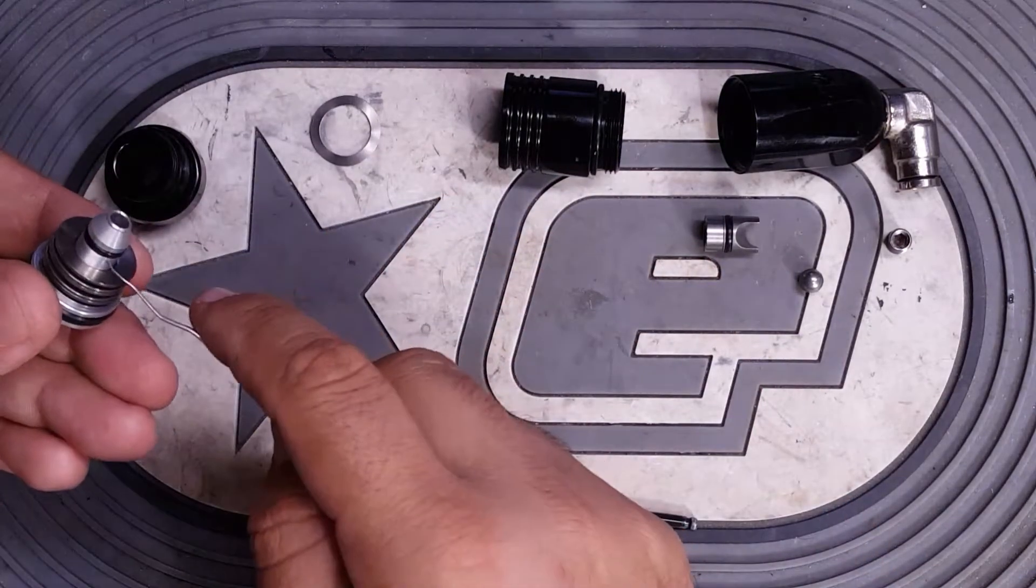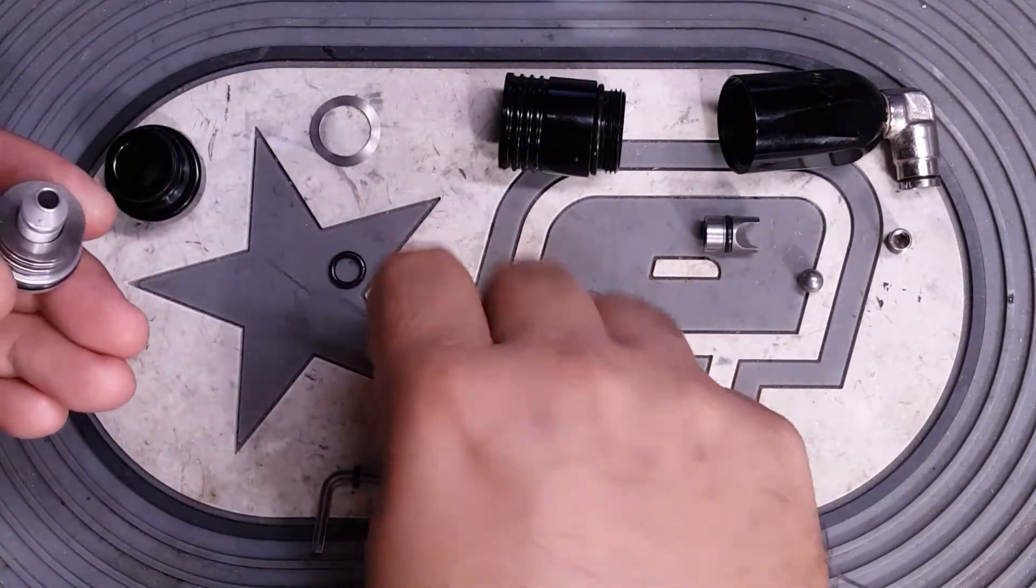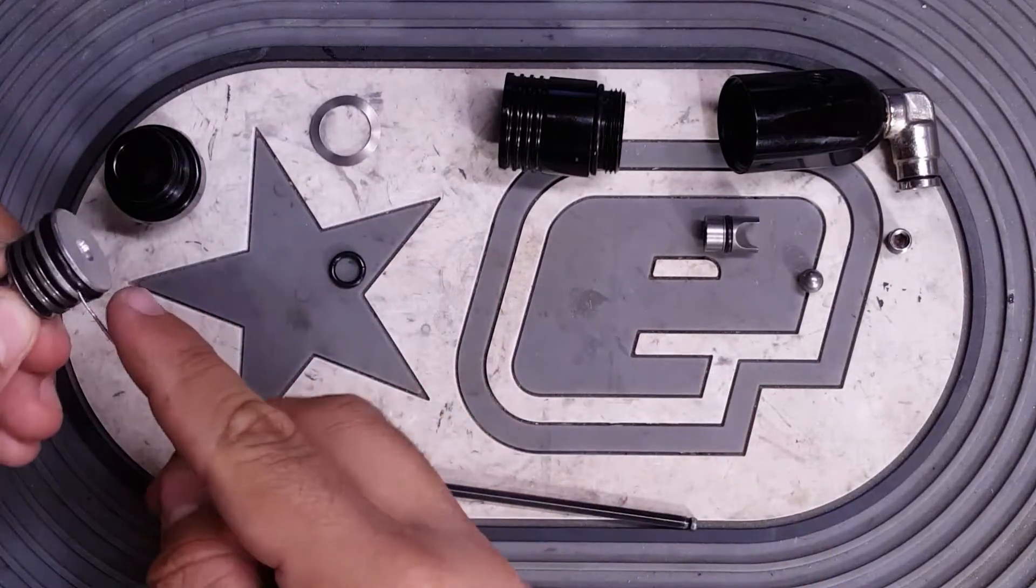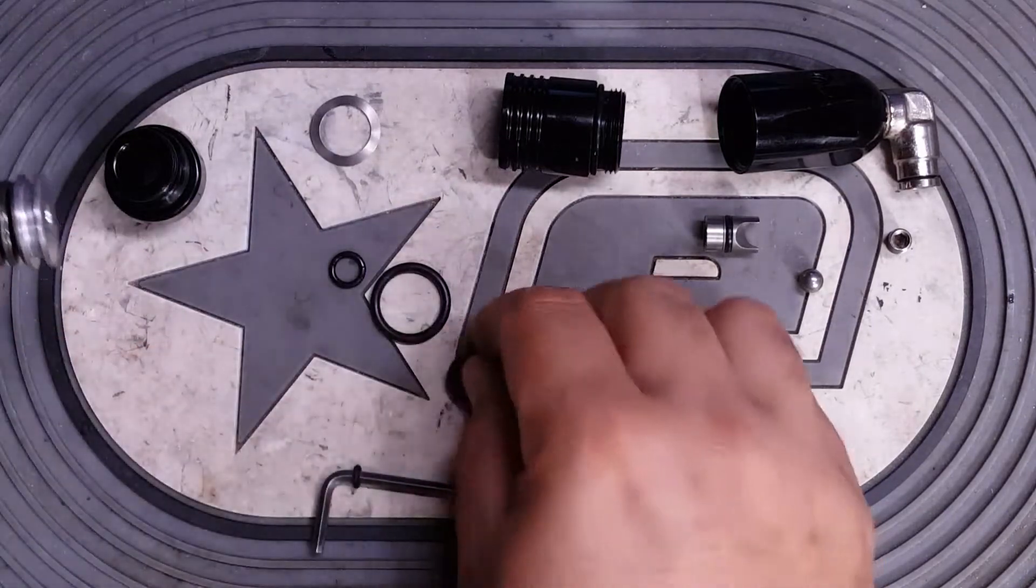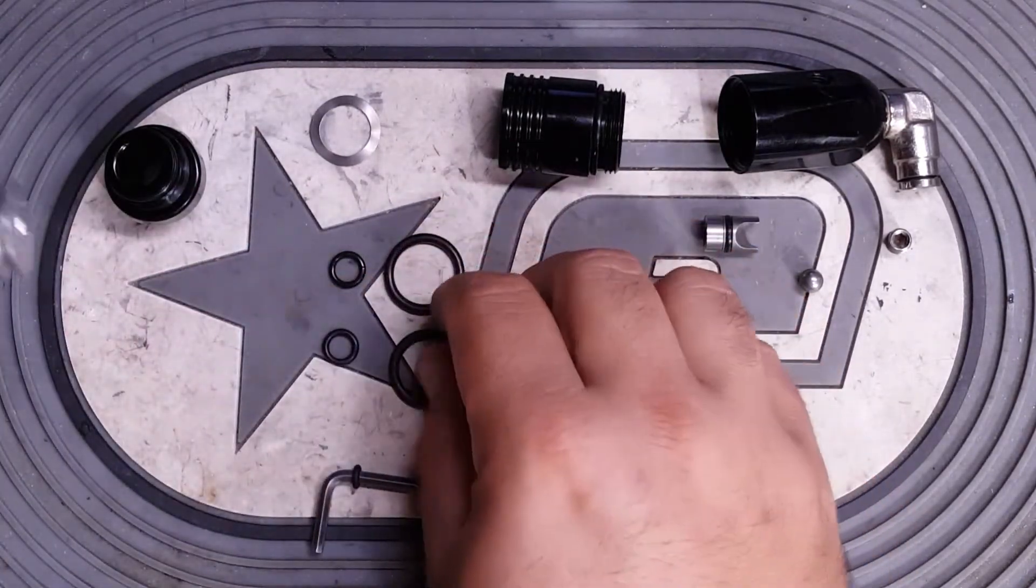Then on the main piston here, on the V1s, the O-ring will be on the piston itself, the bottom one. This is a number 10, 010. And then the one on the top, the fat one, is a 114. So there's the old ones, there's the new ones.